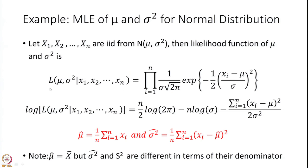Here again, the likelihood function of mu and sigma squared given the realization x1, x2, ..., xn of sample size n is the product of (1 over sigma times root 2 pi) times exponential of minus one-half times ((xi minus mu) over sigma) squared. If you take the logarithm, life becomes much easier — it is (n/2) log(2 pi) minus n log sigma minus summation of (xi minus mu) squared divided by 2 sigma squared.